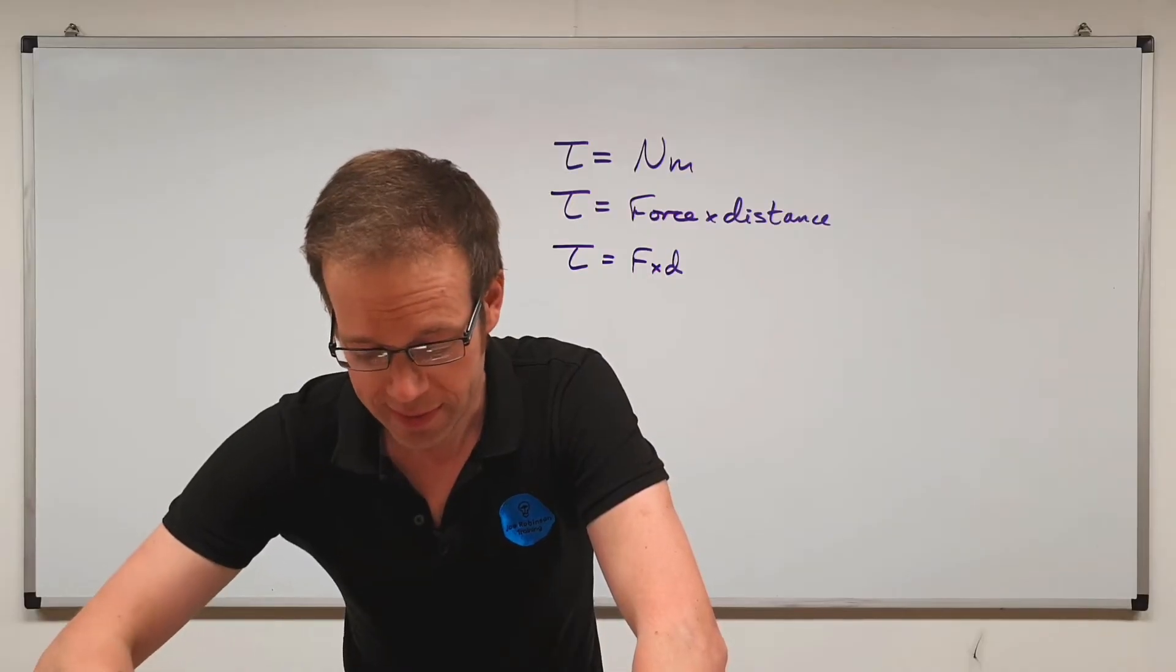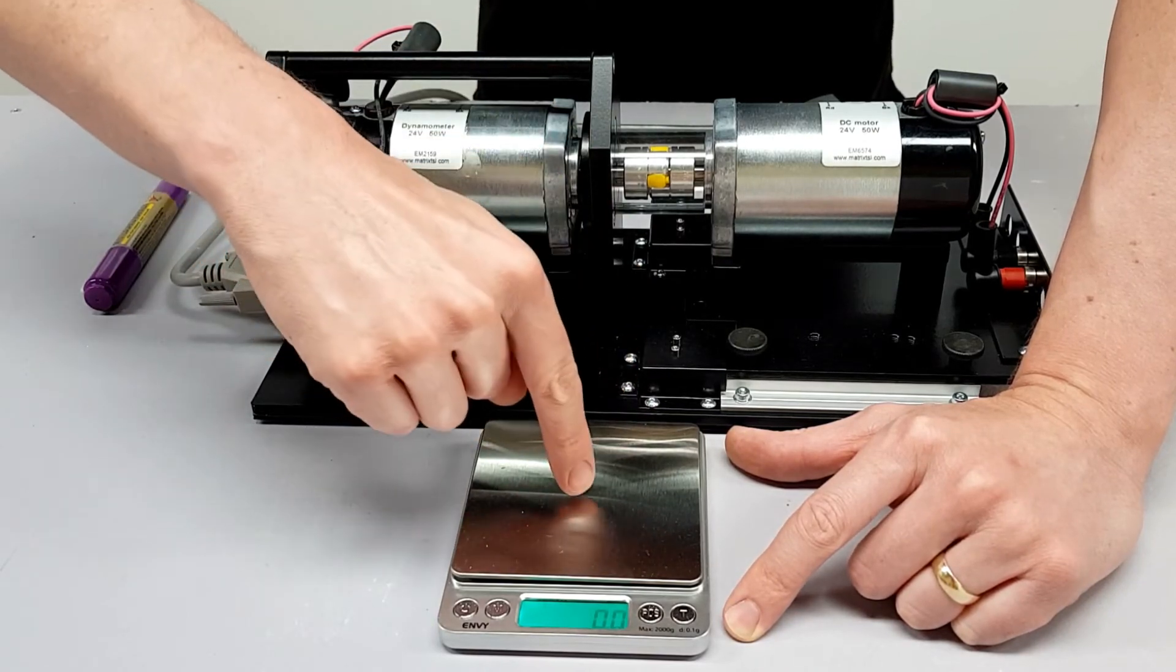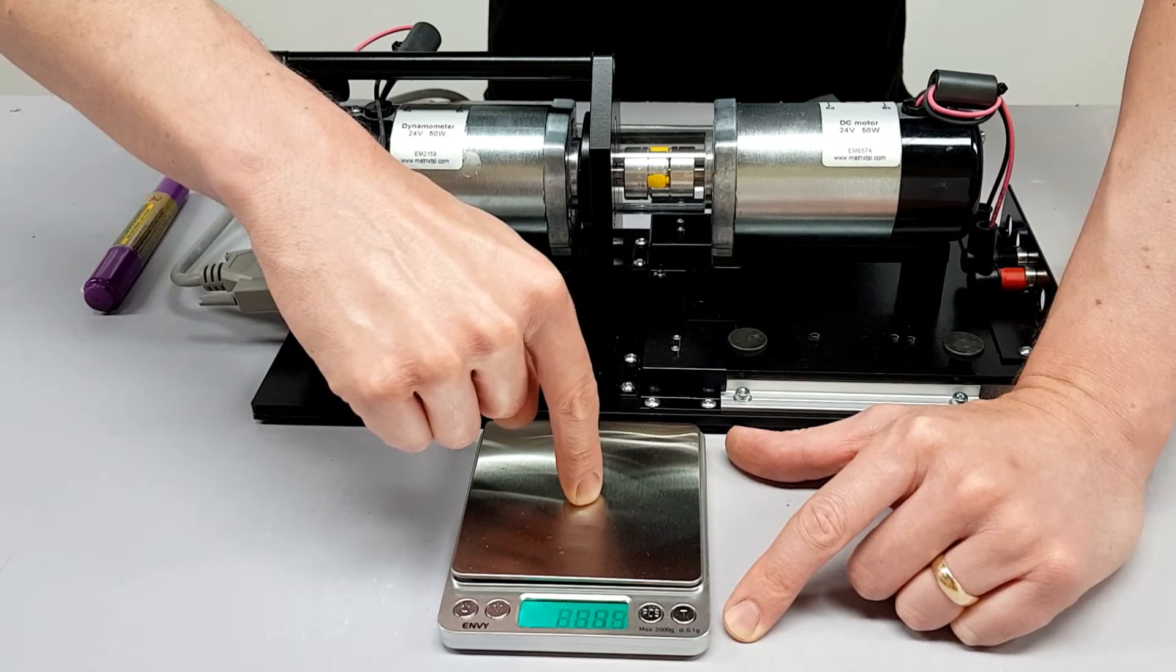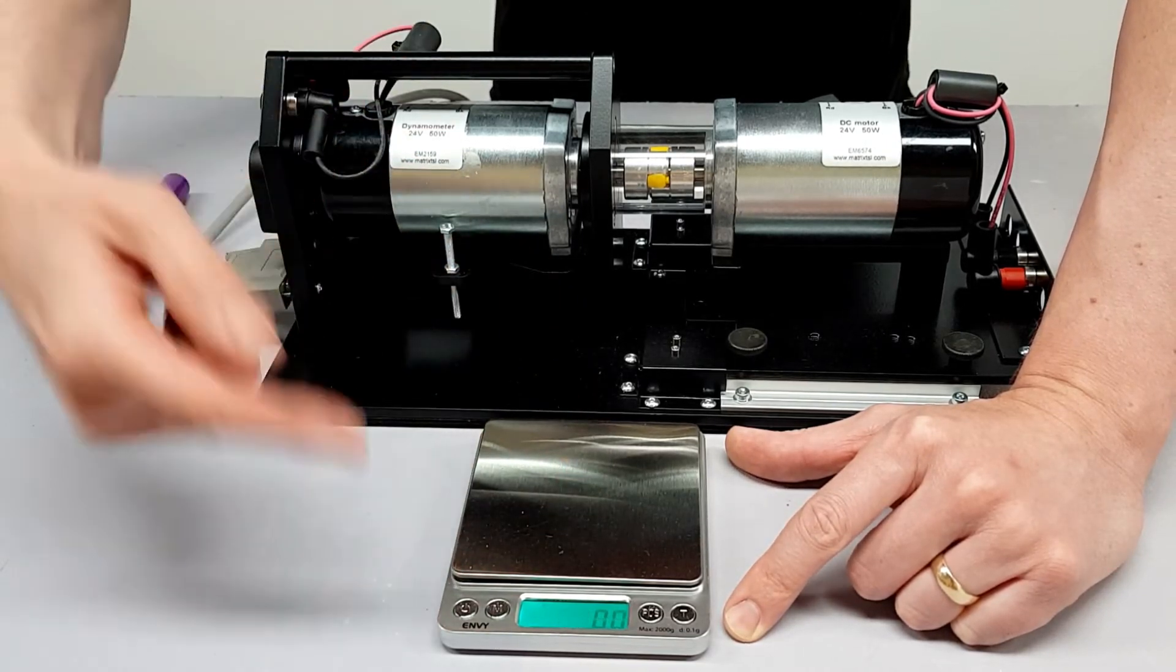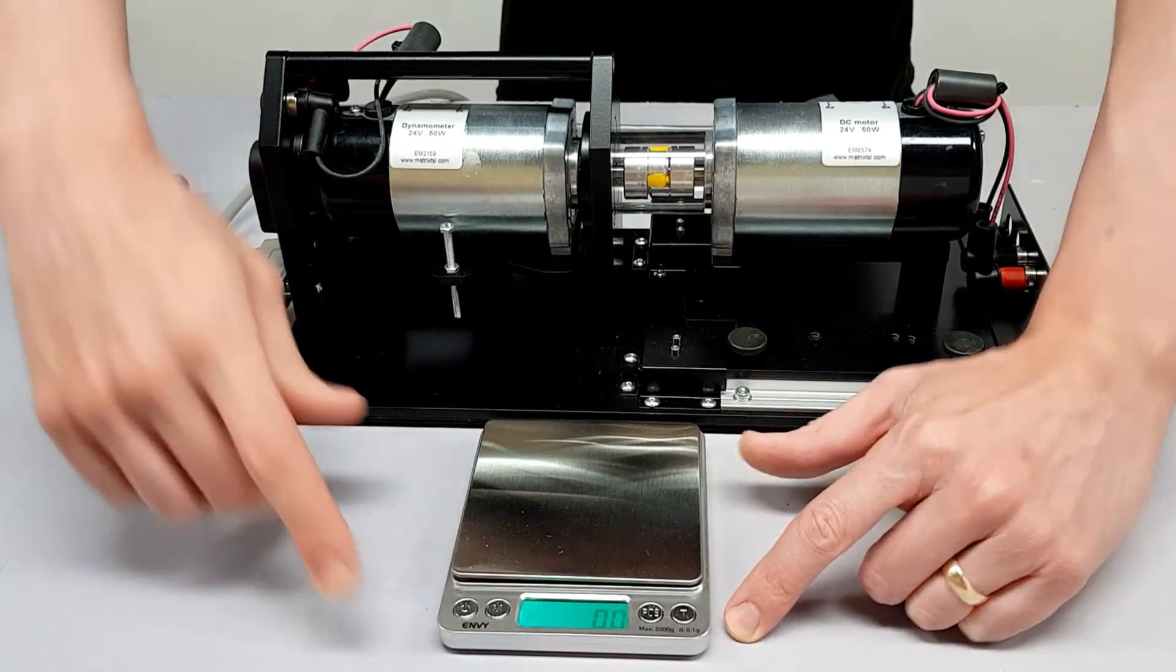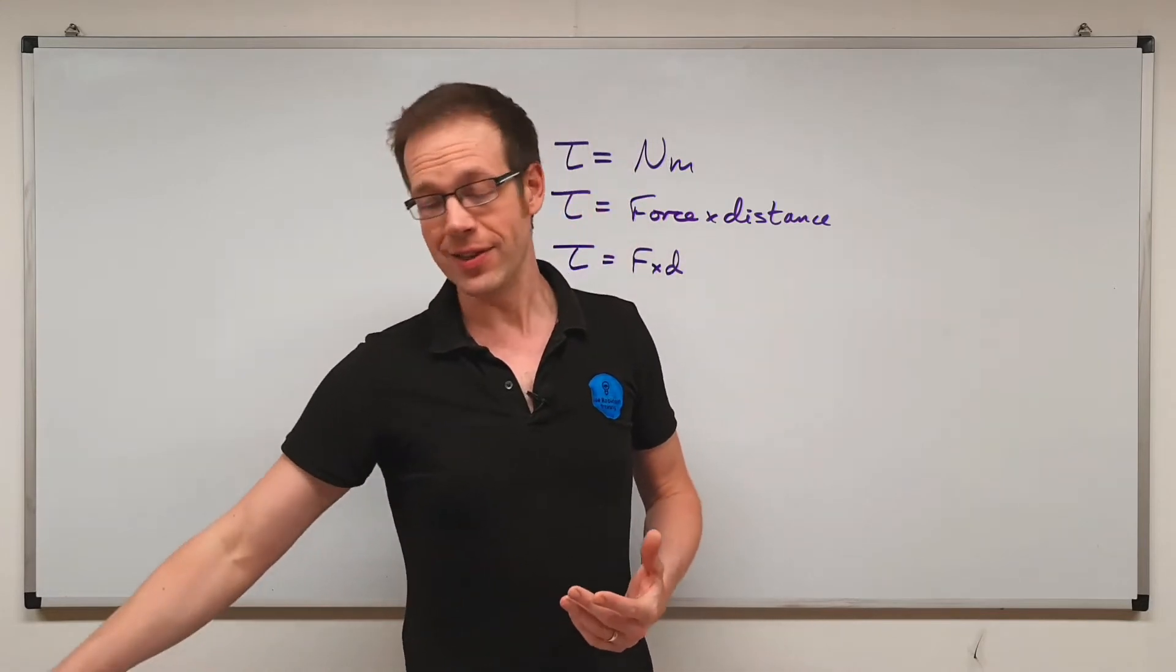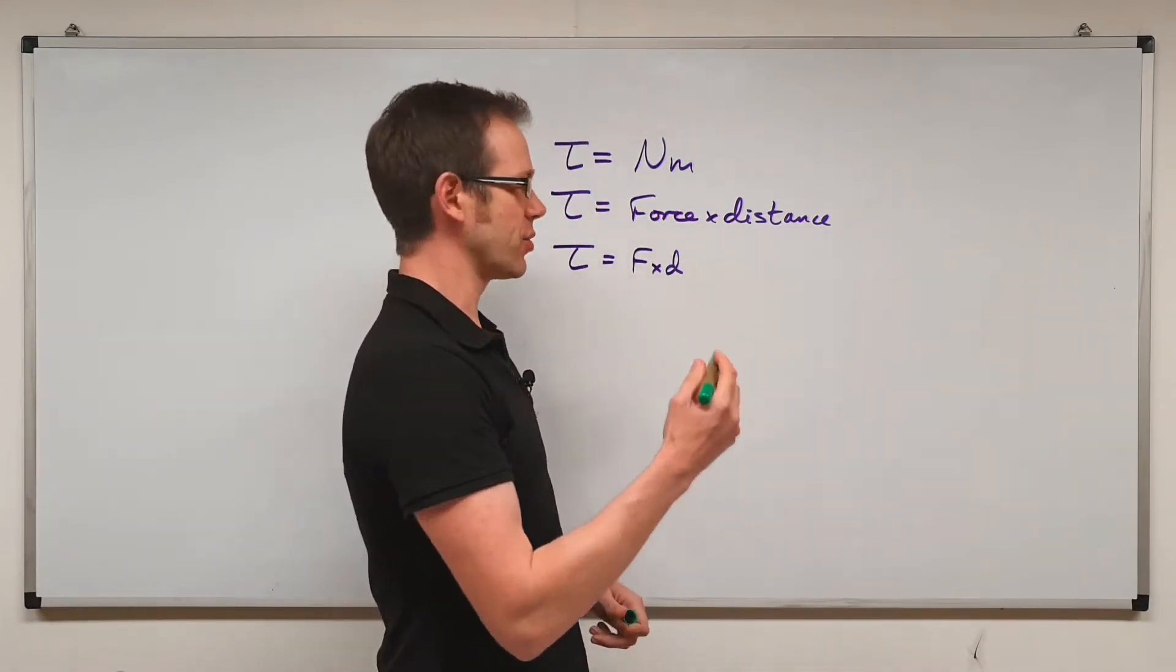Well, the way this works is that these scales are calibrated to work in Earth's gravity. So in other words, if I press down on there with a certain force, it's converting that force into a value of mass, and it's using a mathematical constant for the Earth's gravity. On the Earth, the value of gravity is 9.81 meters per second squared.